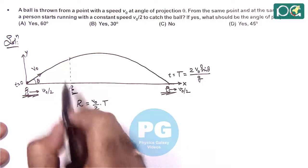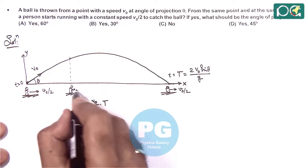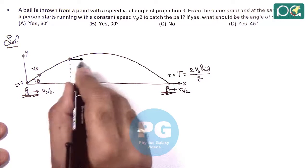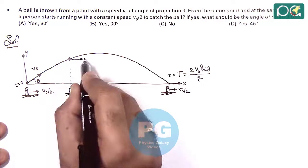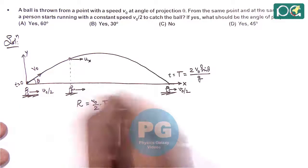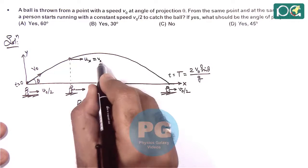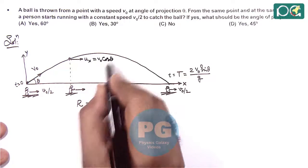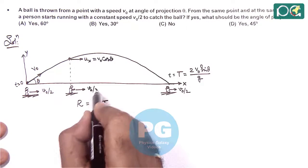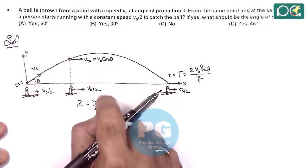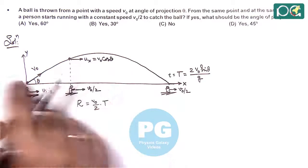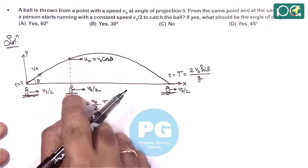the ball and the boy both are having the same horizontal velocity. The ball is moving with velocity ux in horizontal direction, which is V-naught cos theta. The man is running at V-naught by 2. So if both velocities are equal, always the horizontal displacement of the ball equals that of man.